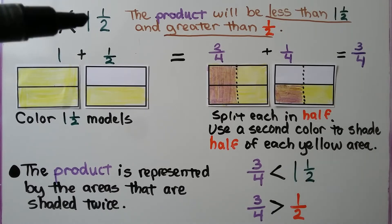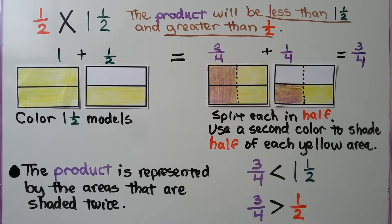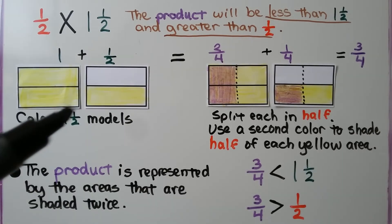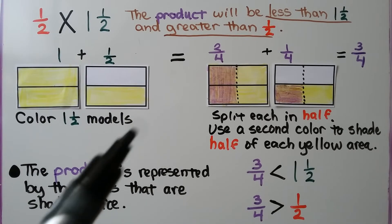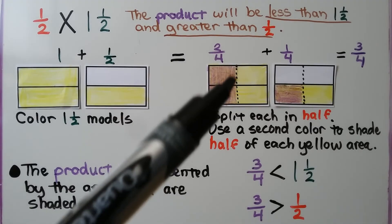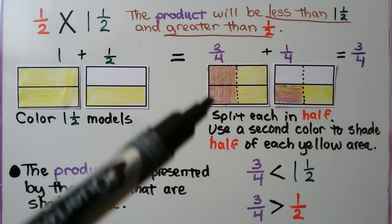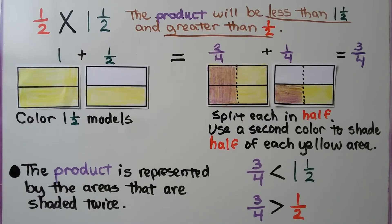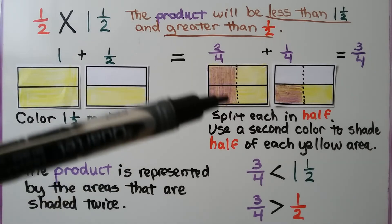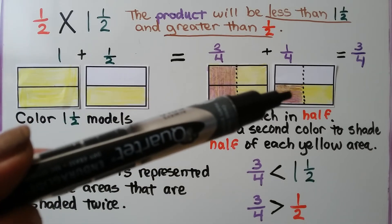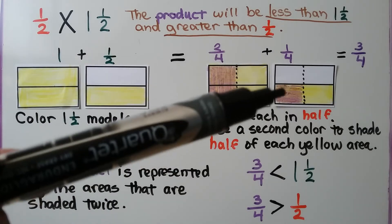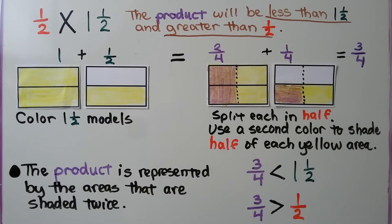Multiplying 1 half times 1 and 1 half: the product will be less than 1 and 1 half and greater than 1 half. We color 1 and 1 half models yellow, then split each in half and shade half of each yellow area in a second color. We color half of this yellow area and half of this yellow area, ending up with 2 fourths and 1 fourth, which equals 3 fourths. The product is represented by the areas shaded twice.